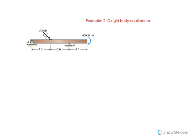Here we want to look at an example of a two-dimensional rigid body problem. We have this beam which is supported by a pin at A and by a roller at B. Our objective is to find the reactions that are developed at this pin and the roller.